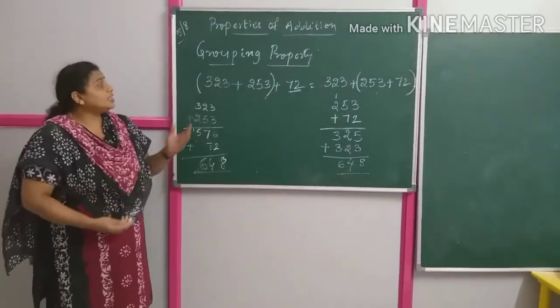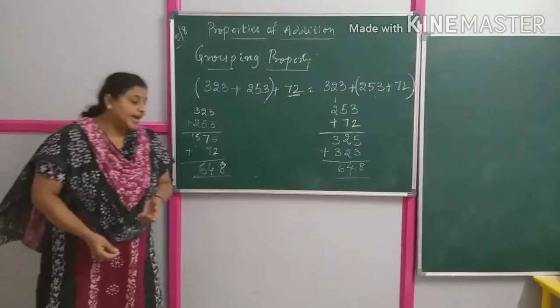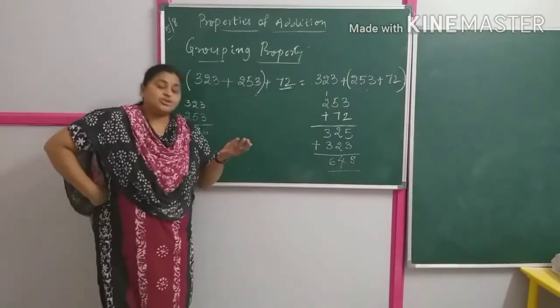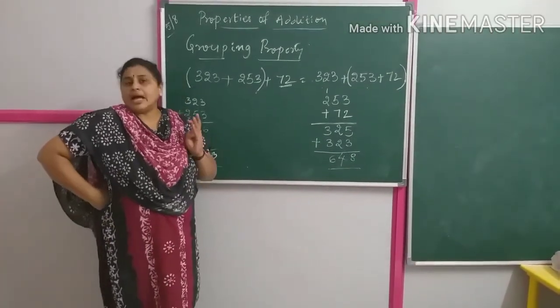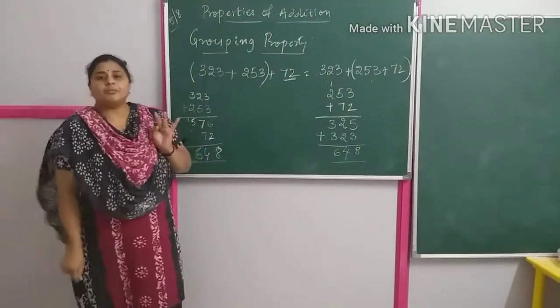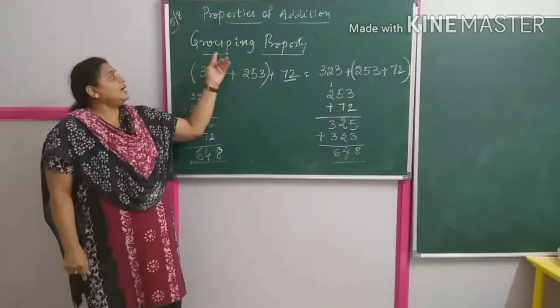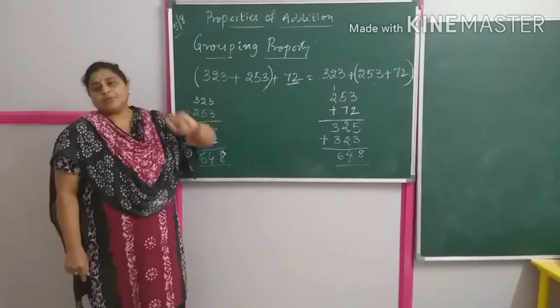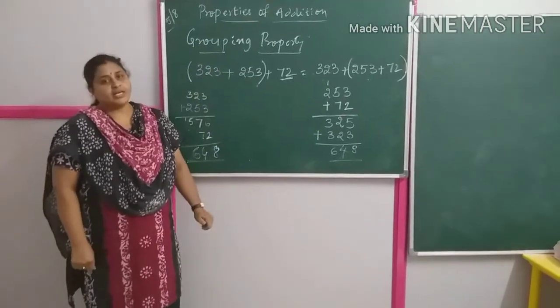So children, what are the four properties we have learned? Addition of one, addition of zero, order property, and grouping property of addition.